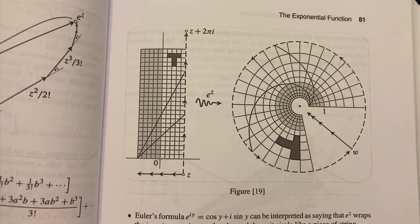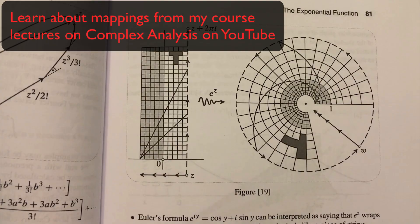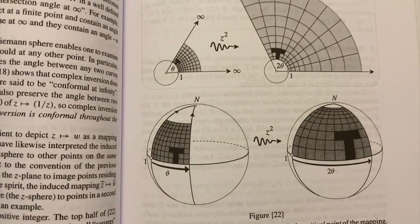In order to truly understand complex analysis, you need to be able to understand complex functions as what are called mappings. Here's an example. It's the exponential map e to the z. It's taking a rectangle in the plane and mapping it to a portion of an annulus. As another example, we can think about the squaring mapping and we can even think about what it does on the Riemann sphere.